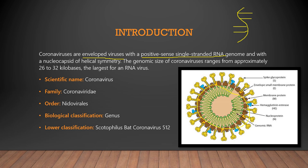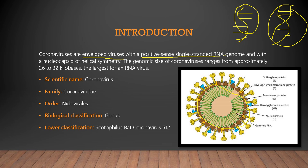DNA is the instructions for what the cell should do and how it functions. The coronavirus RNA is encased with a nucleocapsid — the second layer that keeps the RNA inside properly — and this nucleocapsid has helical symmetry.